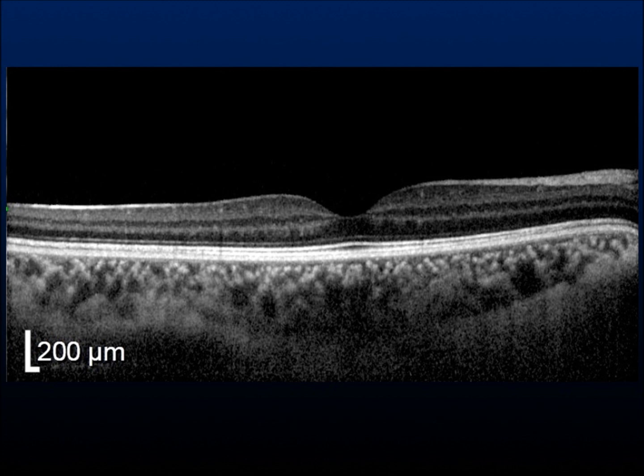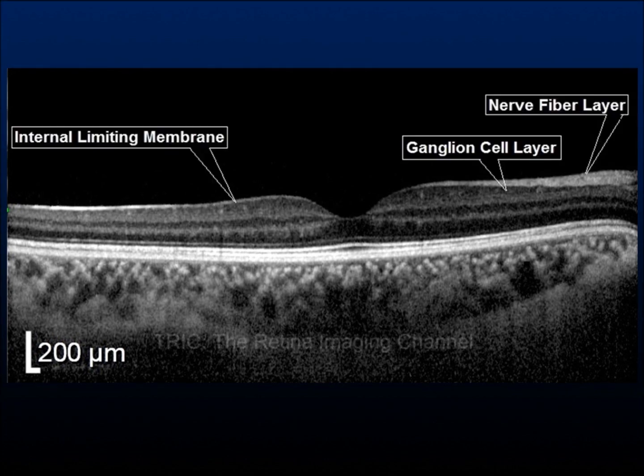Starting from the vitreous side, the first or innermost layer of the retina is the acellular internal limiting membrane. It is followed by the nerve fiber layer, which is particularly thick near the optic nerve head. If you want to know which is the nasal retina and the optic nerve is not provided in the OCT image, the nasal retina is where the nerve fiber layer is more prominent or thicker. Next is the ganglion cell layer, which is a narrow hyperreflective band after the nerve fiber layer.